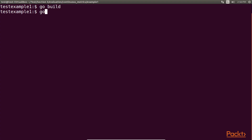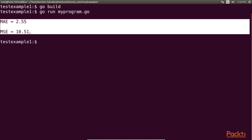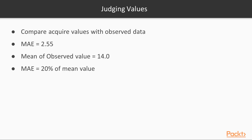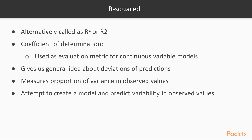Let's check the result in our terminal. We build it and get MAE as 2.55 and MSE as 10.51. To judge if these are good values or not, we need to compare them to the values in our observed data. In particular, the MAE is 2.55 and the mean of our observed values is 14.0, so our MAE is about 20% of our mean value — this is not very good, depending on the context. Along with the MSE and MAE, you will likely see R-squared, also known as R², or the coefficient of determination, used as an evaluation metric for continuous variable models.